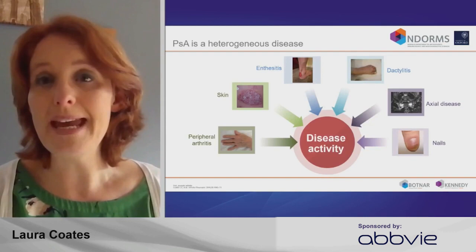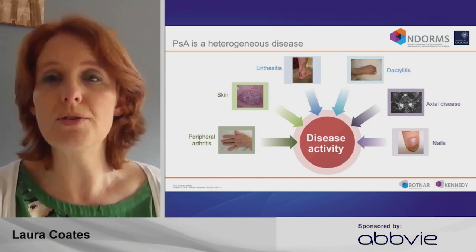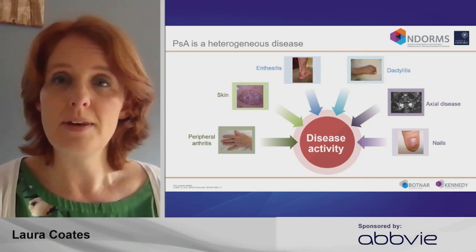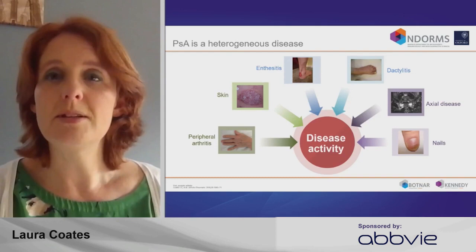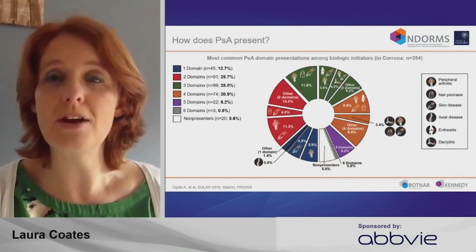We know that psoriatic arthritis is a heterogeneous condition. Patients have different domains that are involved, and so between one patient and another they look very different. The way we treat and assess them is crucial to make sure we're picking up active disease and ensuring that when we define remission, we're thinking about all six different domains: the skin and nail disease, and the musculoskeletal issues — arthritis, enthesitis, dactylitis, and axial disease.